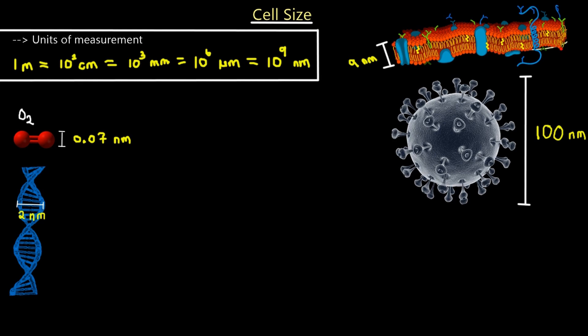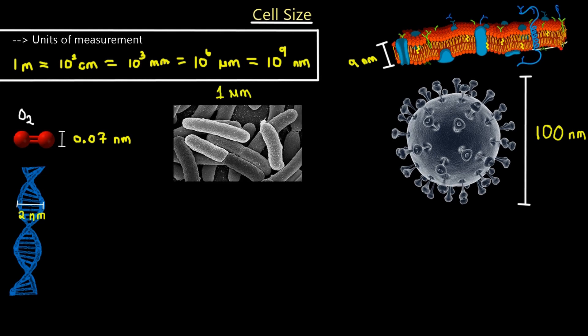Looking at the next bigger example, we're moving from nanometers to micrometers. This is E. coli bacteria—each of these grains here are all E. coli bacteria. The width of E. coli bacteria labeled here is one micrometer. One micrometer is going to be 10 times the size of one of the larger viruses.